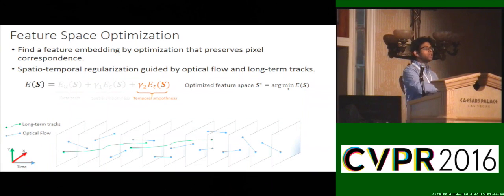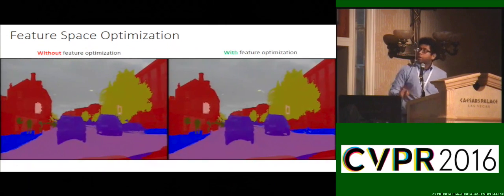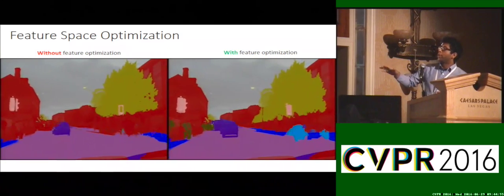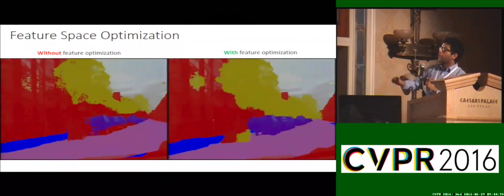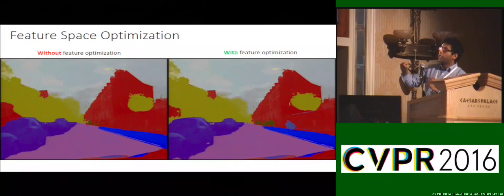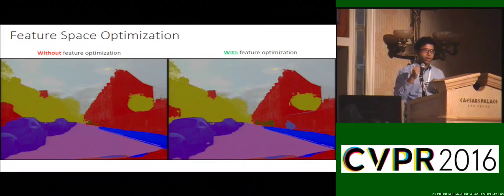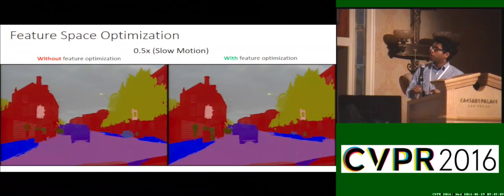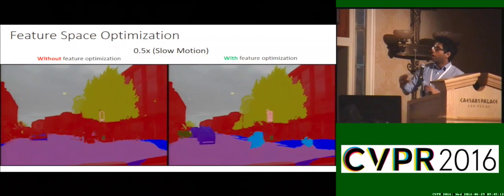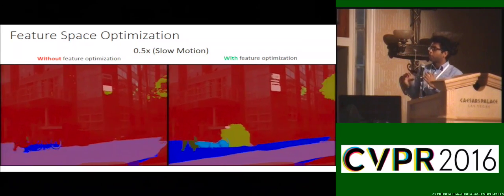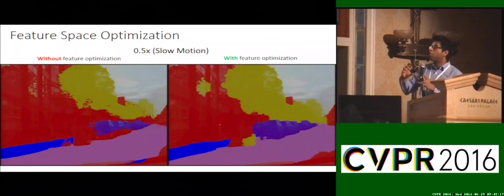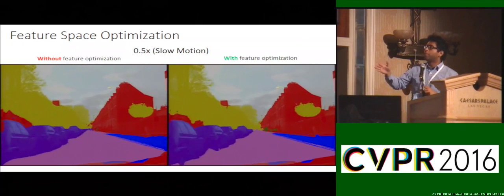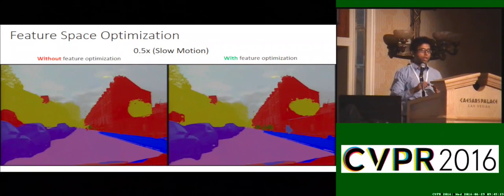Once we have this optimized feature space, we can use it in our dense CRF to get our final semantic label output. Let's see the effect of doing feature optimization versus not doing it. On the left side, we do not do feature optimization, and on the right side, we do. If you look closely, when you do not do feature optimization, the segmentation doesn't stick, it kind of moves around. While on the right, when you do feature optimization, they stick more properly to the actual object.